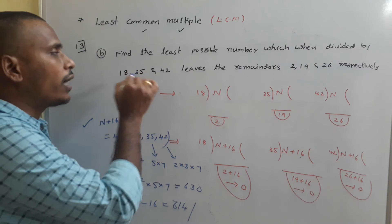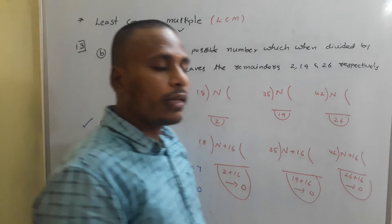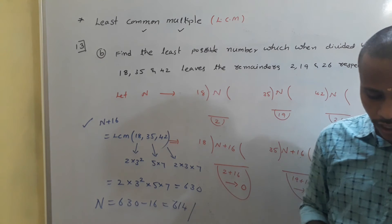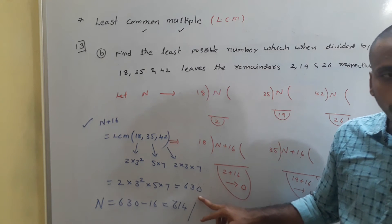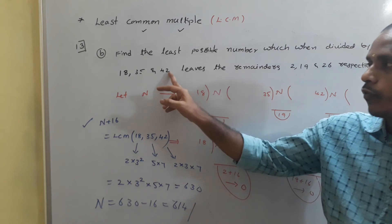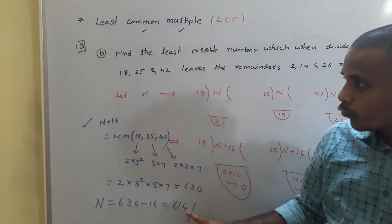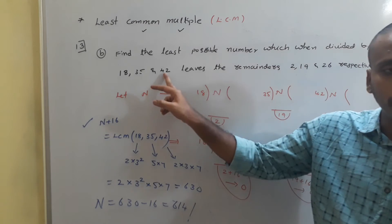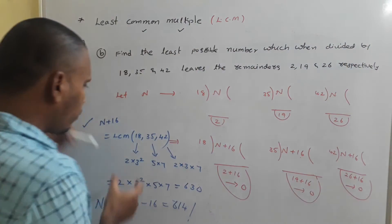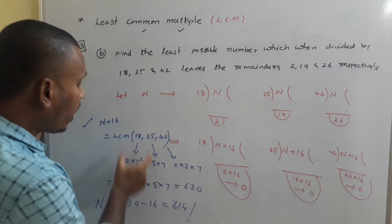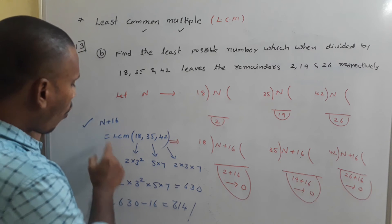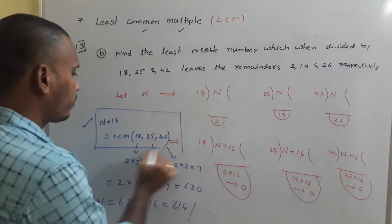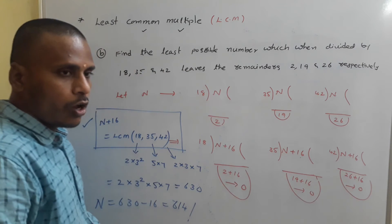The answer is 614. You can verify: when you divide 630 by 18, 35, or 42 the remainder is 0. When you divide 614 by 18 the remainder is 2, by 35 the remainder is 19, and by 42 the remainder is 26. The division representation explains why N + 16 equals the LCM of 18, 35, and 42.